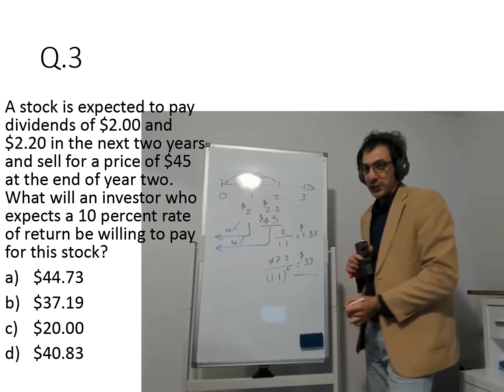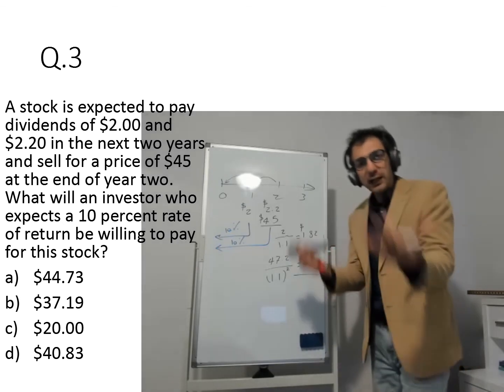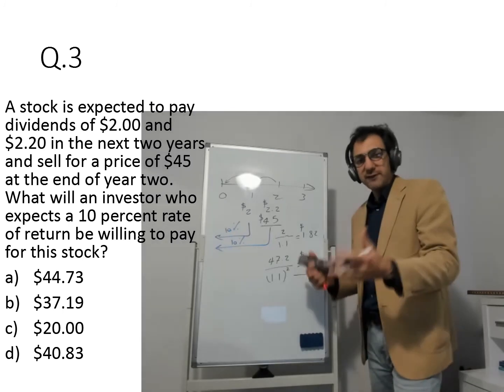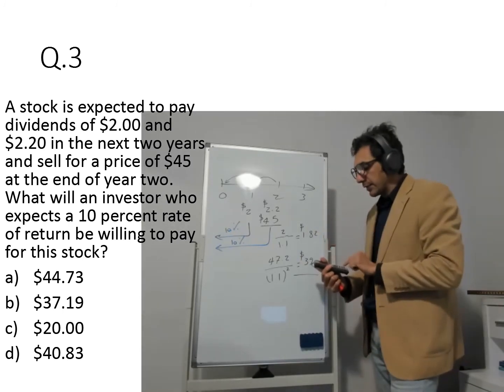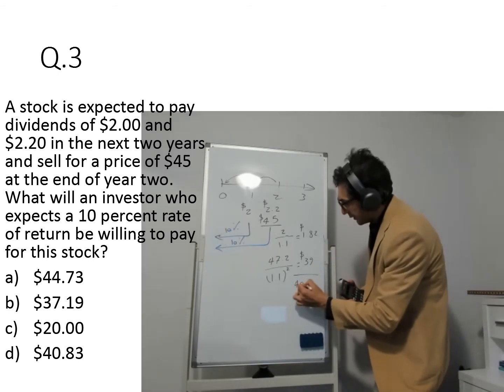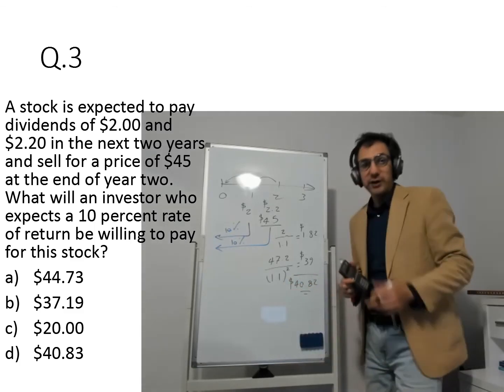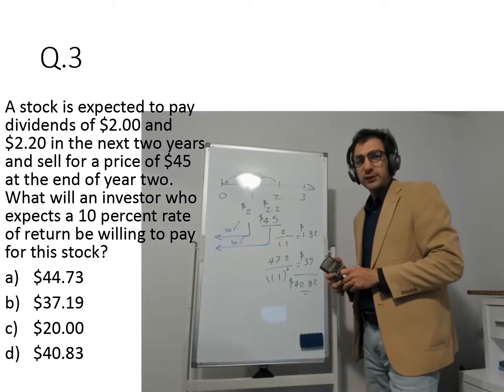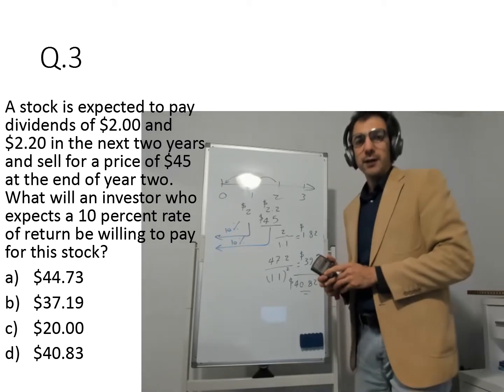However, you already have the cash flow one year from now. So you need to add them all to find the present value of all these cash flows or the present value of all these dividends and the selling price. 39 plus $1.82, for sure it gives you $40.82. So the current price should be $40.82. And the closest number you have here is D.